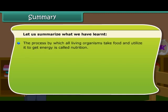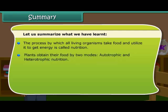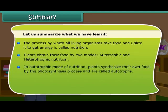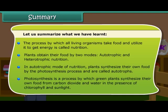Let us summarize what we have learned. The process by which all living organisms take food and utilize it to get energy is called nutrition. Plants obtain their food by two modes: autotrophic and heterotrophic nutrition. In autotrophic mode of nutrition, plants synthesize their own food by the photosynthesis process and are called autotrophs. Photosynthesis is a process by which green plants synthesize their own food from carbon dioxide and water in the presence of chlorophyll and sunlight.